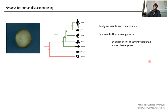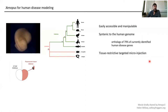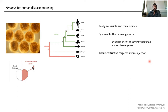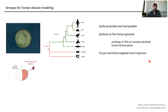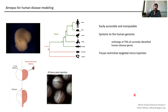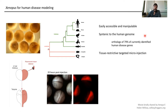Frogs are also peculiar in that one can do tissue-restrictive targeted microinjection. In a two-cell embryo, the left and right axis is predefined and almost no cells cross the midline during development — in direct contrast to most mammalian species. For example, delivering a fluorescent tracer dextran to one side of the animal, 20 hours post-injection, it is nicely retained on one side.